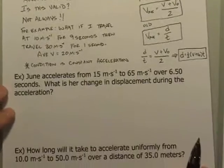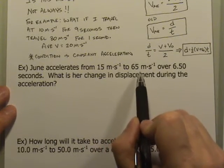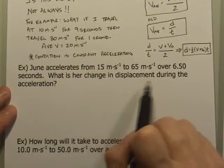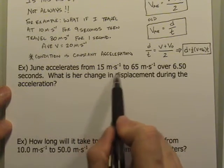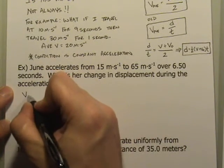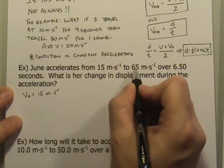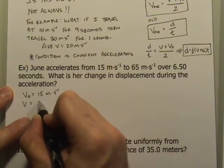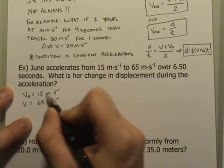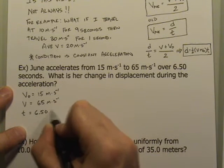So let's go ahead and do a couple of quick example problems. June is going to accelerate from 15 meters per second to 65 meters per second over a period of 6.5 seconds. And the question is, what is her change in displacement during that acceleration? So let's just go right in order through the variables. The 15 meters per second, it says from 15, so that implies that that is the initial velocity. Up to 65, so that is my final velocity. And that's going to occur over a time period of 6.50 seconds.